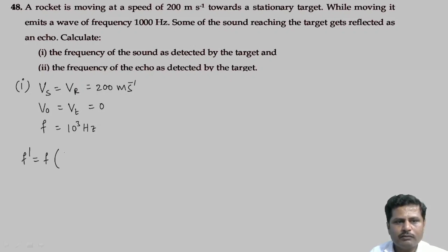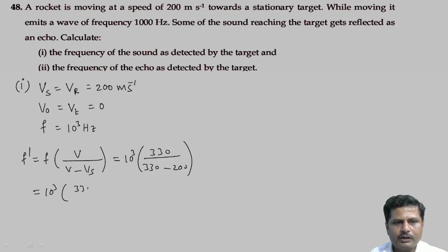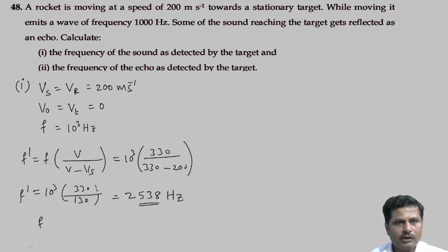Using the Doppler formula, apparent frequency equals real frequency into v divided by (v minus vs), since the source moves toward the observer. Substituting: f dash equals 1000 into 330 divided by (330 minus 200), which is 1000 into 330 divided by 130. This equals 2538 Hertz. This is the frequency of the sound as detected by the target.